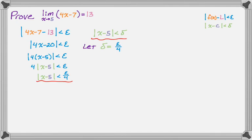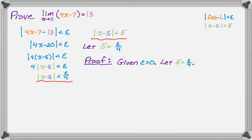The proof always starts the same way: given epsilon greater than 0, let delta equal epsilon over 4. We want to show that if the absolute value of x minus c is less than delta, that implies the absolute value of f(x) minus L is less than epsilon — we just reverse our steps to make it happen. We start with the absolute value of x minus 5 is less than delta, which implies the absolute value of x minus 5 is less than epsilon over 4 by direct substitution.